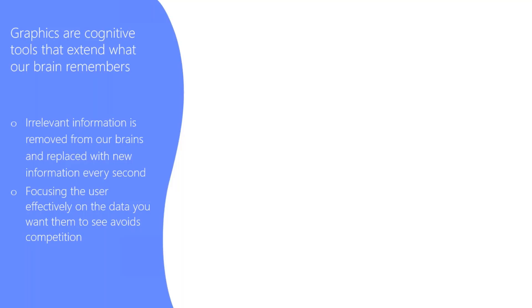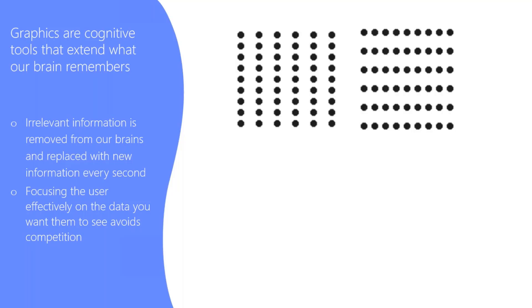So when we think about graphics, graphics are cognitive tools that extend what our brain remembers. This is one of my favorite visualizations that you've probably seen many times, but it's basically a bunch of dots in rows or is it in columns? Based on how your brain works, you're seeing this as a bunch of rows or a bunch of columns or vice versa.